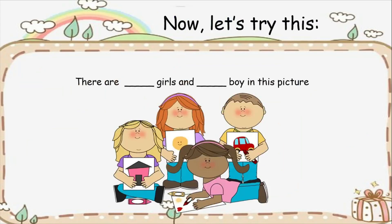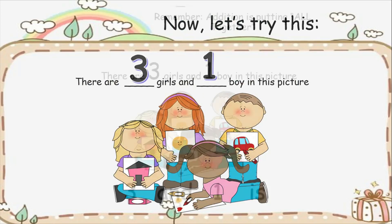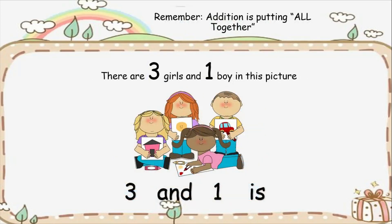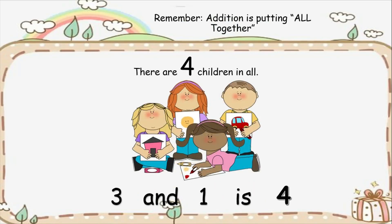Do you remember this? Let's try this again. In this picture, there are how many girls and how many boys? There are three girls and one boy. Three and one is how many in all? How many children are there in the picture? There are four children in all. Three and one is four.